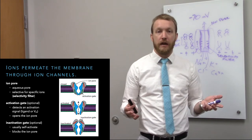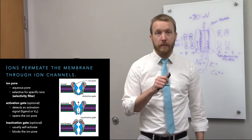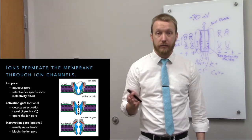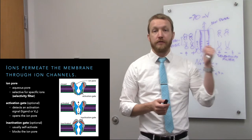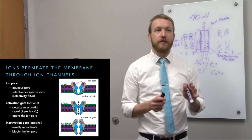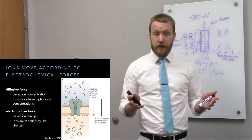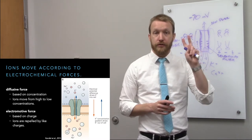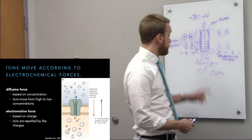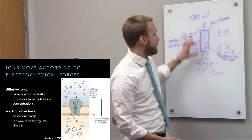If all you have is the ion pore and the selectivity filter with no gates, you're a leak channel, and you create the resting membrane potential. No ligand or voltage change is needed — it's always open. In leak channels, ions move according to two forces: the diffusive force and the electrical force, since these ions are charged and the charge at the membrane affects how they move.